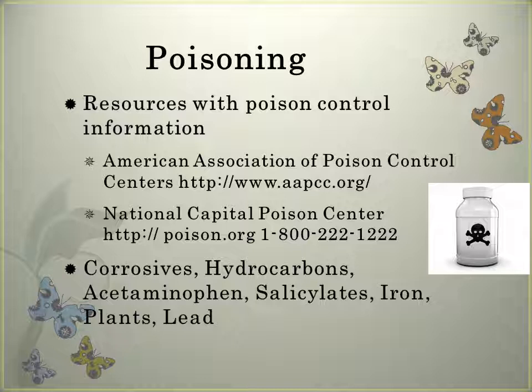With iron poisoning, sources include mineral supplements or vitamins. Emergency treatment includes emesis or lavage. Chelation therapy is used if there's severe intoxication and may turn the urine orange. Plant poisoning: consider most plants to be poisonous — then you're safe knowing which ones are not. Emergency treatment includes inducing emesis, washing the skin or eyes, and supportive care.